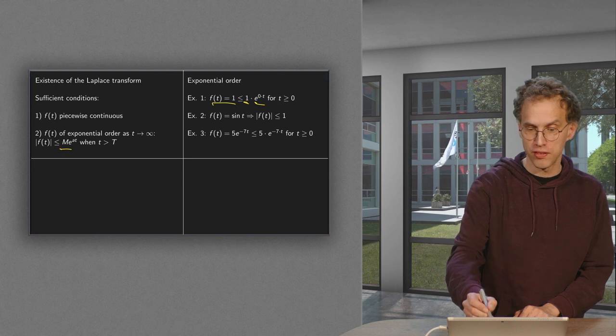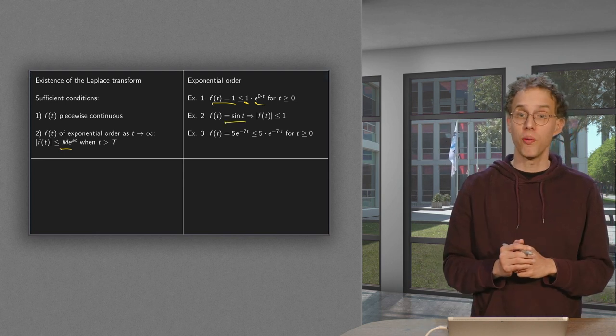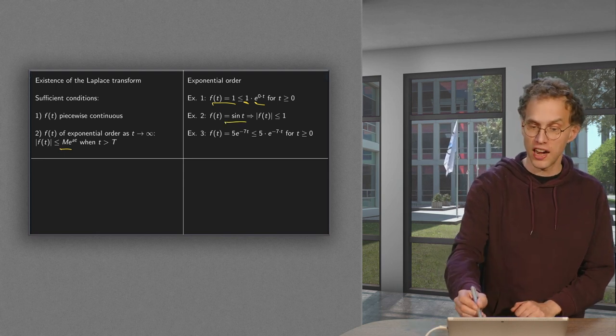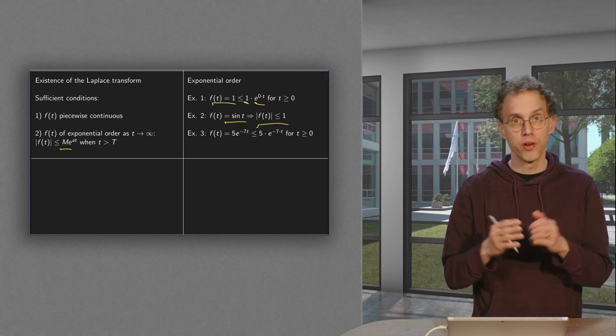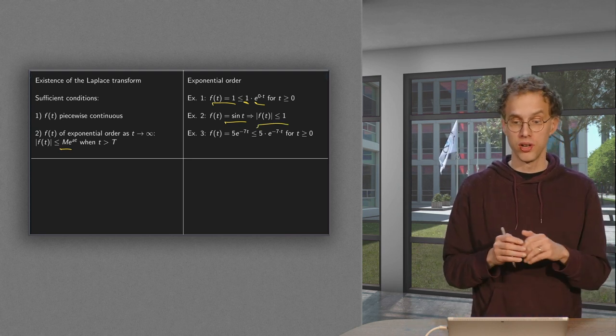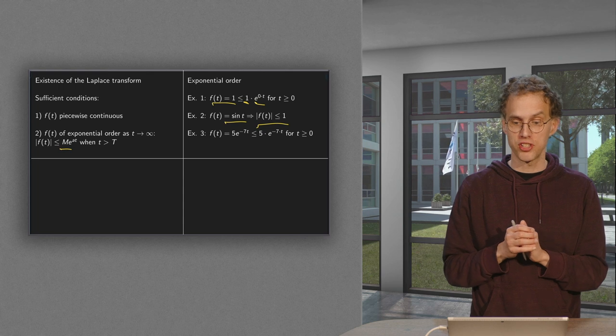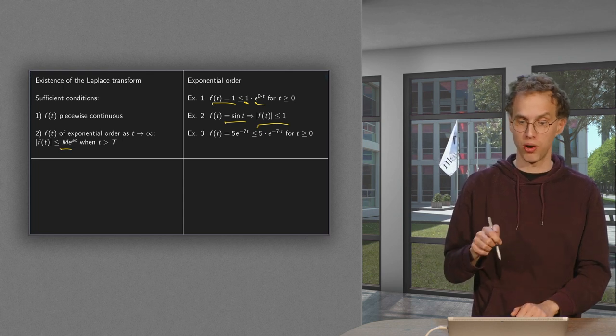Another example, f of t equals sine t. Well, that's even easier because the sine is below 1 and 1 was already of exponential order. So we can make the same estimate for the sine. And sine t is also of exponential order.